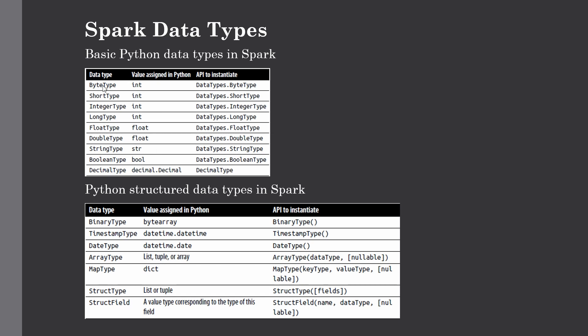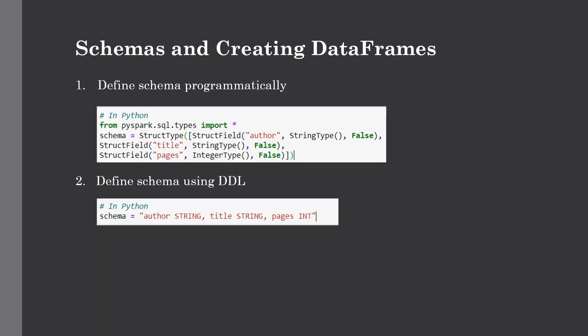Here are some of the basic data types in Spark. The first category is basic data types for Python, and then we have structured data types. The basic types include ByteType, ShortType, IntegerType, LongType, FloatType, DoubleType, and StringType, as shown in the table. For structured data types, we have BinaryType, TimestampType to deal with date and time, DateType, ArrayType for lists, tuples, or arrays, and finally StructType and StructField, which are very important to define your schema.